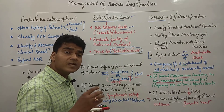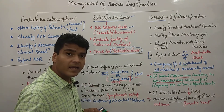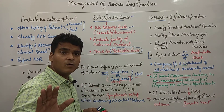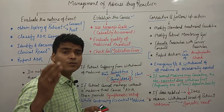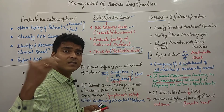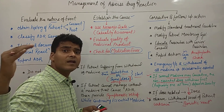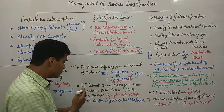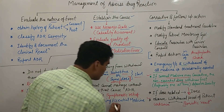If the patient cannot manage without the medicine that is causing the ADR, then the adverse drug reaction will be treated with symptomatic treatment. For example, if a patient is suffering from cancer and anti-cancer drugs are causing severe nausea and vomiting, then ondansetron is prescribed to treat the nausea and vomiting, while the cancer therapy is regularly maintained because cancer therapy cannot be stopped.